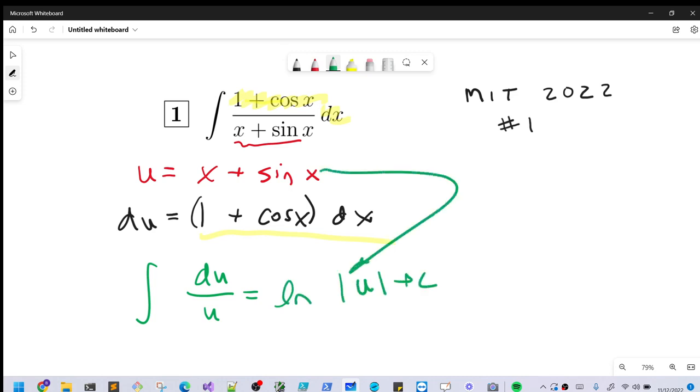Then we're going to back substitute. When we do that, we're going to have for our final answer: natural log of ln absolute value x plus sine x plus c. And we're done.